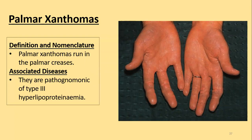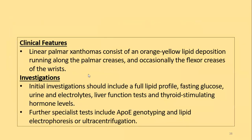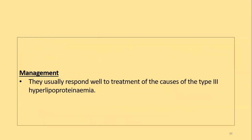The last type are palmar xanthomas, which run in the palmar creases. They are pathognomonic of type 3 hyperlipoproteinemia. Clinically characterized by orange-yellow lipid deposition along the palmar creases and occasionally the flexor creases of the wrist. Investigations include lipid profile, fasting glucose, urine and electrolytes, liver function tests, and thyroid stimulating hormone levels; further specialized tests include apoE genotyping, lipid electrophoresis, and ultracentrifugation. Management responds well to treatment of type 3 hyperlipoproteinemia.